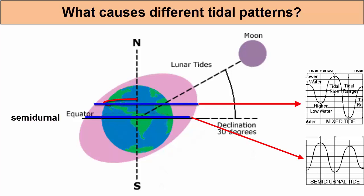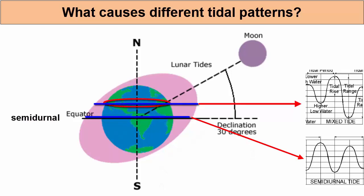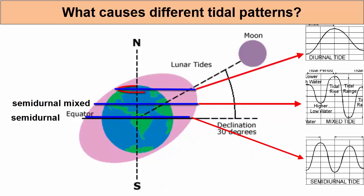If we are at the mid-latitudes, however, we will move through the two bulges, but different parts of them with different water levels. Thus, we experience semidiurnal mixed tides. At the poles, we miss one bulge entirely, so we rotate through only one bulge per lunar day and experience a diurnal pattern.